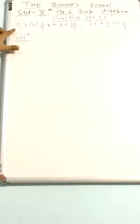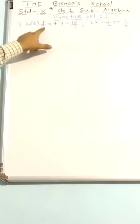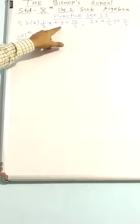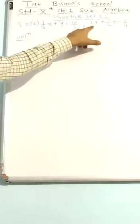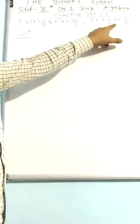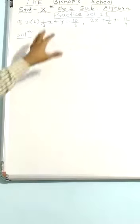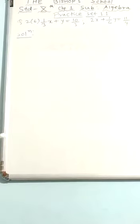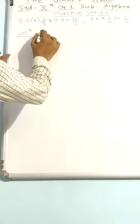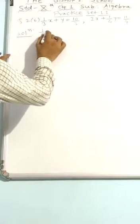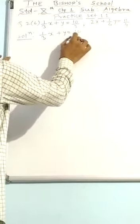Next question is question number 2, the sixth one. The equations given are: 1 upon 3x plus y equal to 10 upon 3, and 2x plus 1 upon 4y equal to 11 upon 4. These two equations are given to us. I am writing the first equation: 1 upon 3x plus y equal to 10 upon 3.